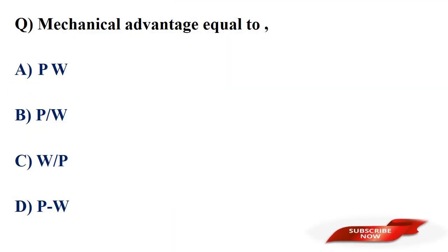Mechanical advantage is equal to? Options: P×W, P by W, W by P, P minus W. Answer: option C, W by P. Mechanical advantage equals load divided by effort, where load is denoted by W and effort by P. So mechanical advantage = W/P.